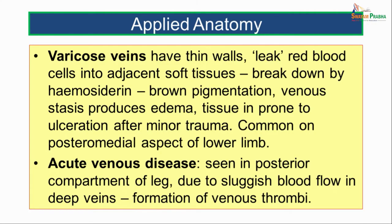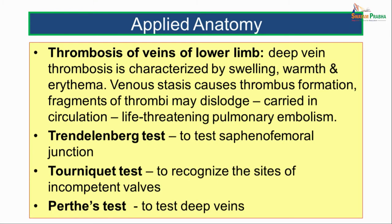Acute venous disease is seen in the posterior compartment of the leg due to sluggish blood flow in the deep veins. This sluggish blood flow over time gives rise to formation of venous thrombi. Deep vein thrombosis is characterized by swelling, warmth, and redness or erythema. Fragments of these thrombi may get dislodged, carried in the circulation, and can give rise to life-threatening pulmonary embolism.